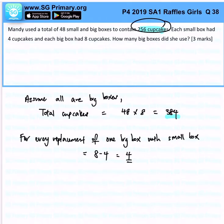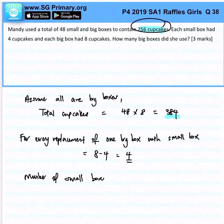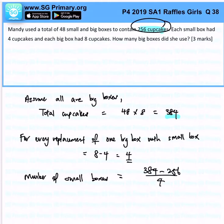So how many small boxes must there be such that we can reduce it from 384 to 256? So the number of small boxes — we need to find the difference from 384 down to 256, and we divide by 4, because every one box replaced decreases the count by 4. And that gives us 32 small boxes. So 32 small boxes are required such that we will have 256 cupcakes.